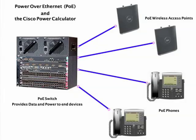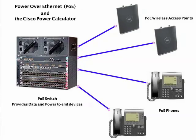So why would you want to power something over an Ethernet connection? Typically, things like access points are a great thing to power over Ethernet, because we don't then have to run 110 volts up into the ceiling. All we have to do is run the Ethernet up there and then you've got everything you need — your data and your power to that device.